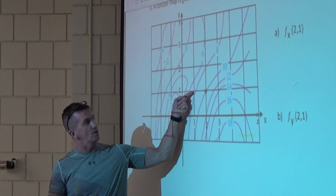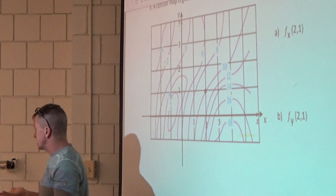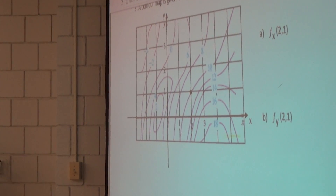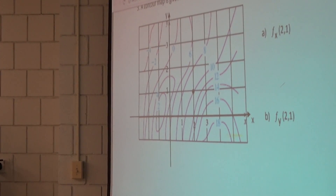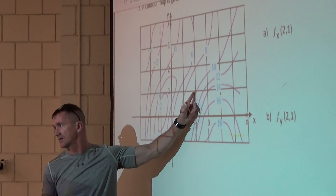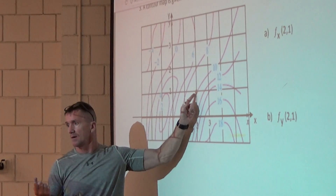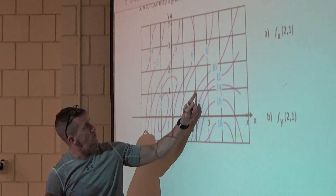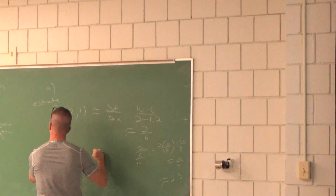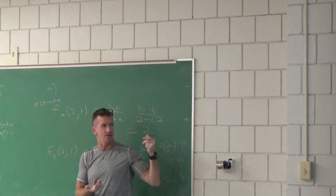If we moved in the positive x direction, the temperatures are increasing, so fx is positive — about 2.5 degrees Celsius per increase in x. Now can you do fy in a similar manner? For fy, just tell me whether it would be positive or negative. If you move in the positive y direction from that point, are the values of f increasing or decreasing? Decreasing — so fy at (2, 1) would be negative.